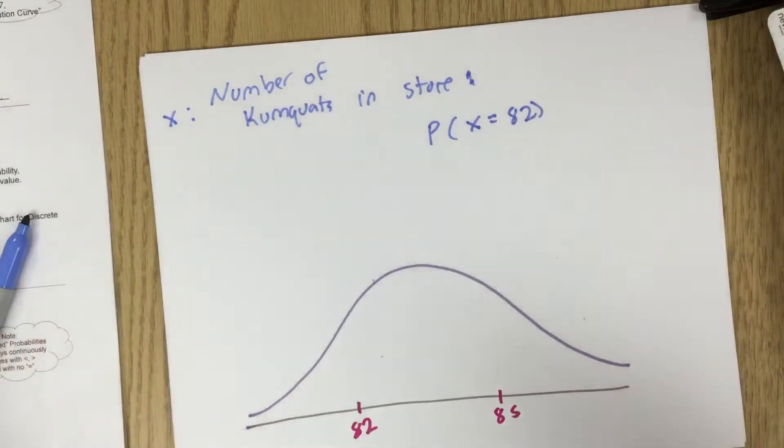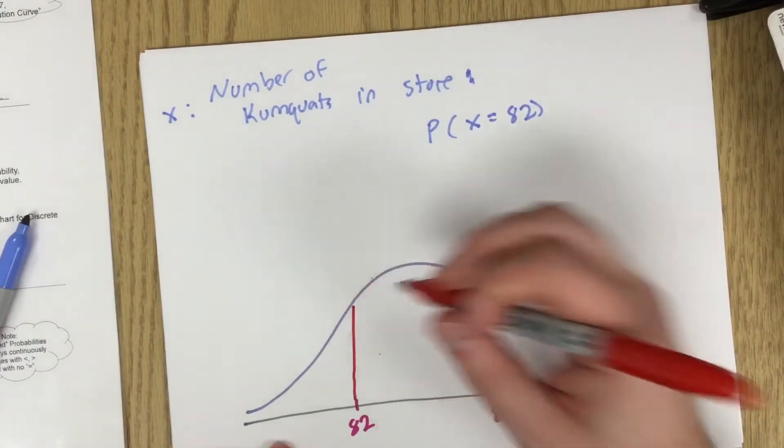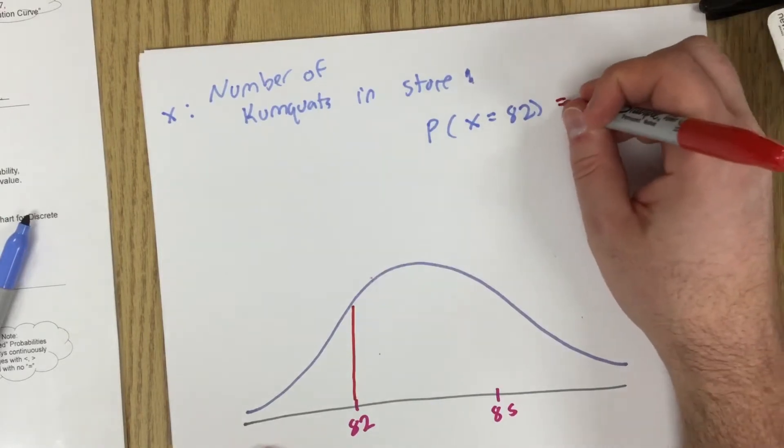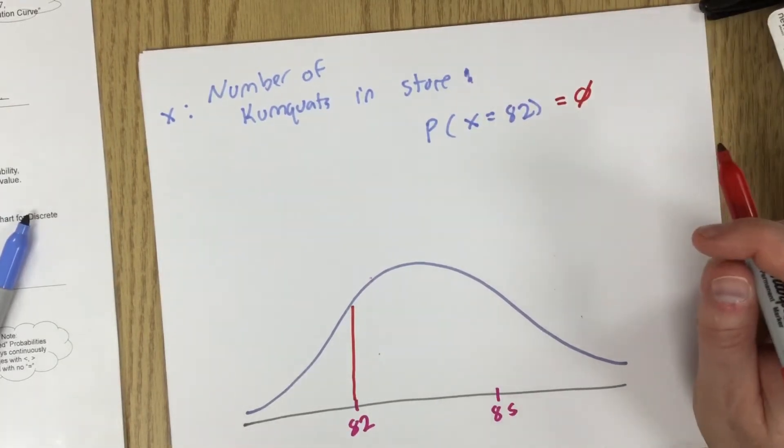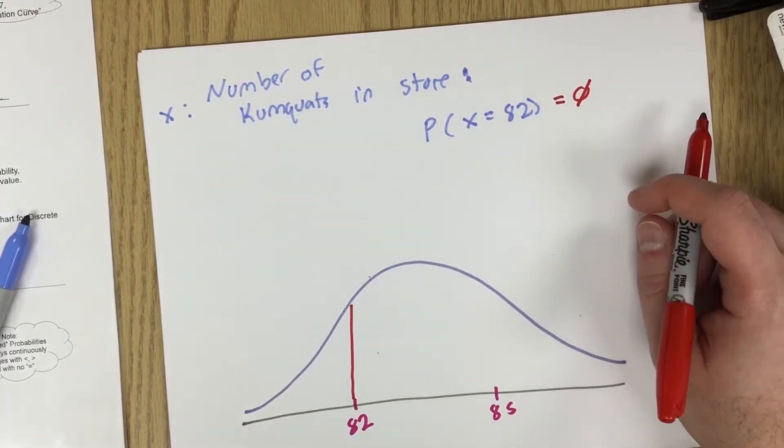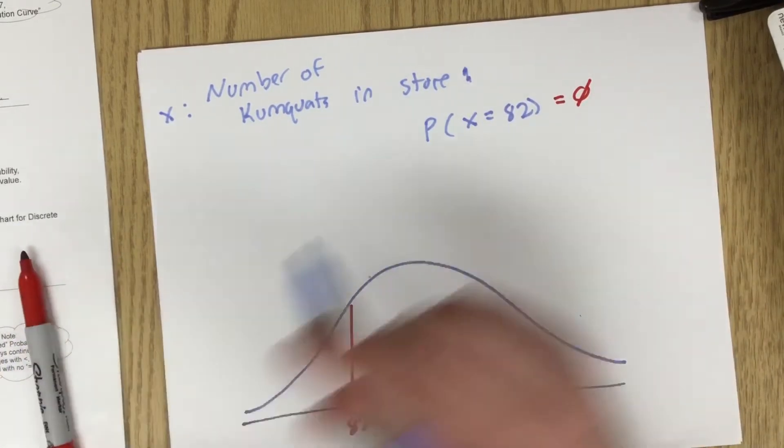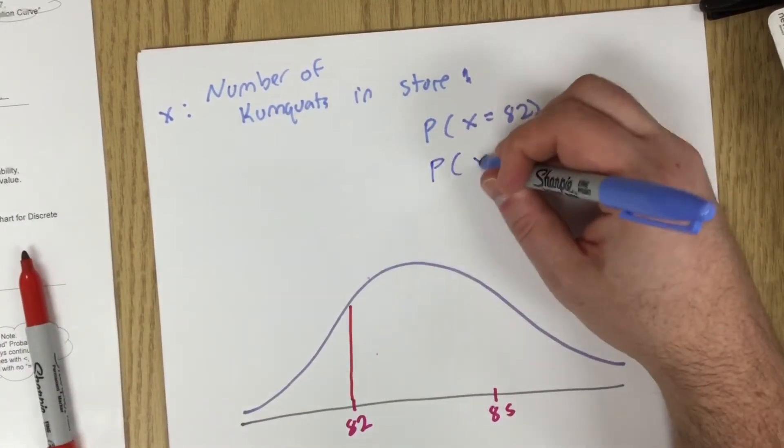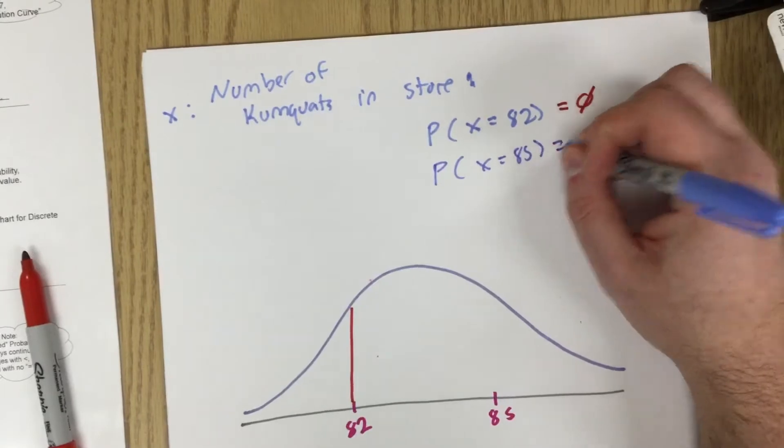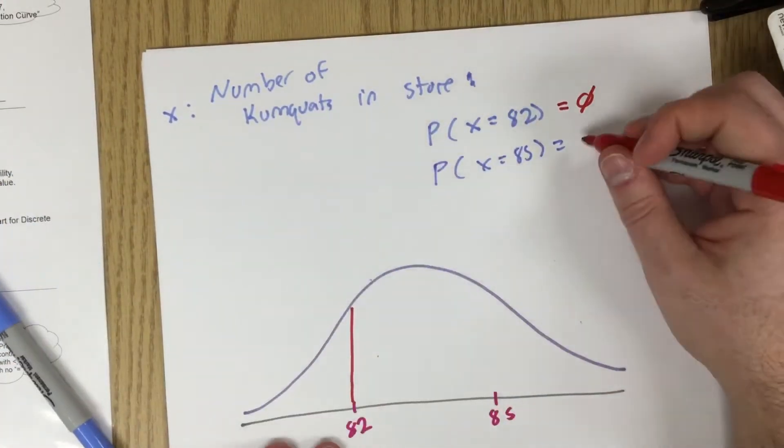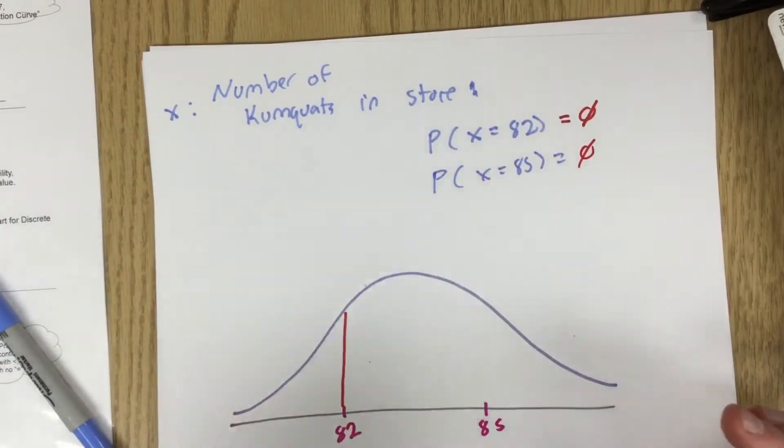So I take a look at my normal distribution curve. I find the area for 82 and I find out that the probability is zero. And that doesn't really seem right. If I do it for any number of kumquats that's also going to be zero. So we need to fix something up.